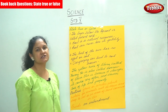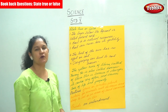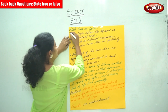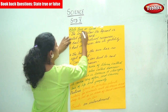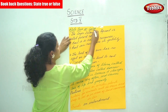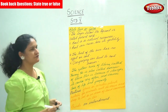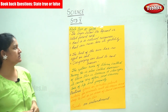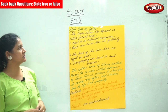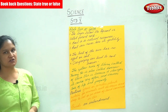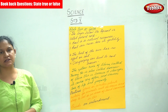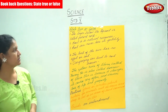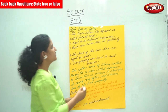Next we are going to state whether these sentences are true or false. The first statement is: the layer that is found below the topsoil is called the parent rock. It is false.